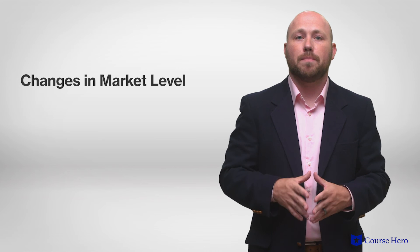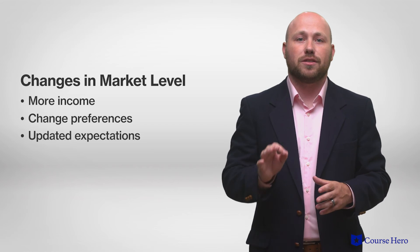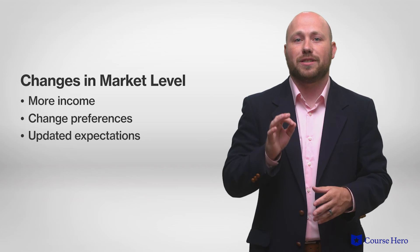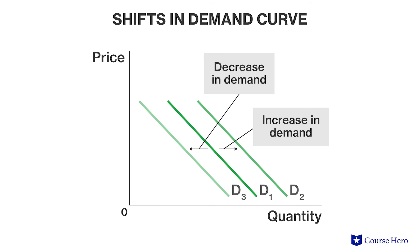A change in demand, in contrast, involves all of the available price points and is shown by a shift of the entire curve. Any changes at the market level will affect how much gets consumed at all different price levels. For example, consumers may have more income, they may change their preferences, or they could have updated expectations about future prices. Any of these could cause shifts of the entire demand curve and affect the quantity of items purchased at every price. During times of economic expansion, the quantity demanded increases because people tend to have more disposable income. If demand for an item increases, the demand curve shifts to the right and we observe new combinations of prices and quantity demanded. If demand decreases, the curve shifts to the left. Changes in demand occur when some factor other than the price of the product influences consumers' purchasing decisions.